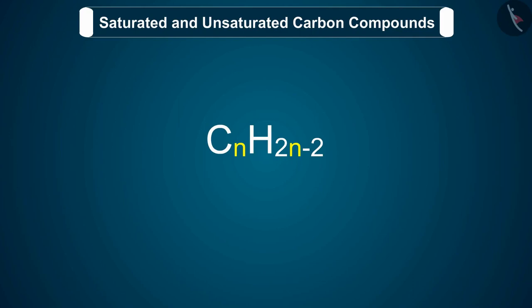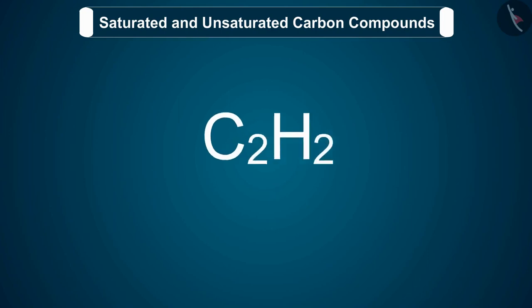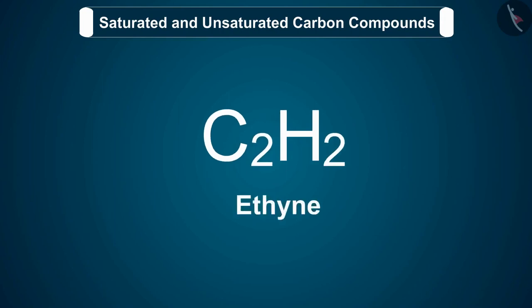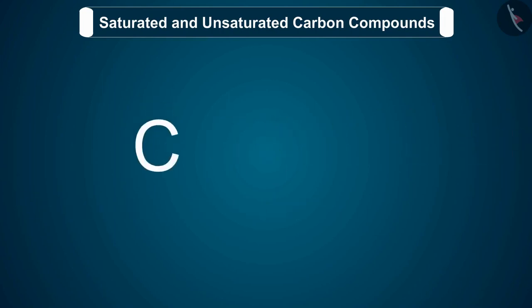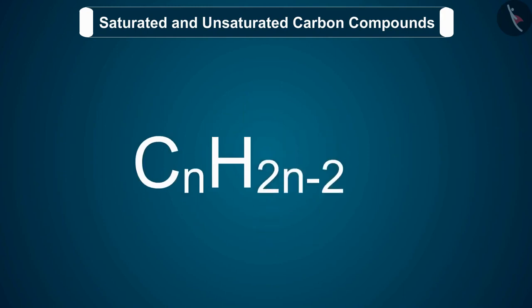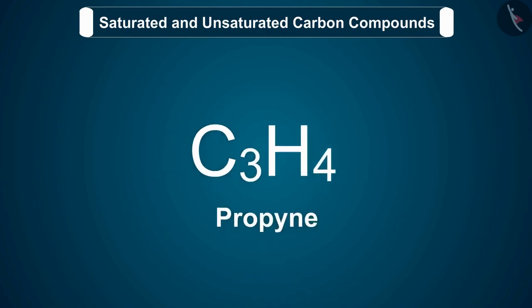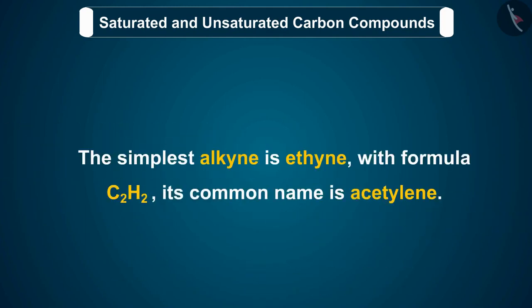If an alkyne has two carbon atoms, then n equals 2 and its formula will be C2H2, which is ethyne. Similarly, if we take n equal to 3, we get propyne. The simplest alkyne is ethyne, with formula C2H2, and its common name is acetylene.